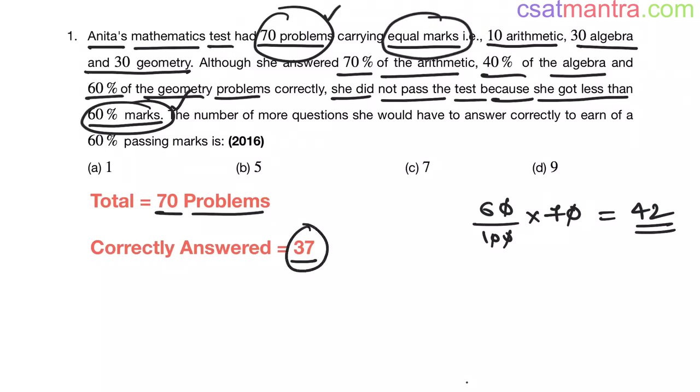But she attempted 37 only. Now, how many more questions she would have to answer correctly to earn 60% passing marks? That is 42 minus 37. This is equal to 5. So she has to attempt 5 more questions correctly to earn 60% of passing marks.